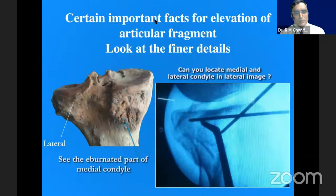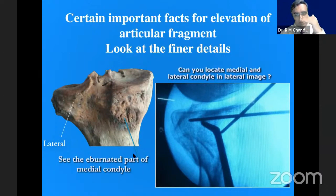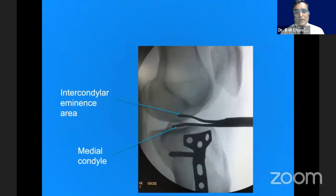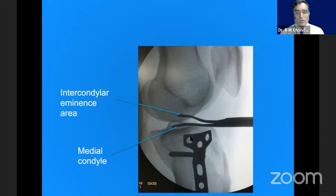This is one picture I like to emphasize quite often. This is the lateral tibial condyle and this is the hibernated part of the medial condyle. How do we see on a lateral SIAM image? We see the lateral condyle and the medial condyle — the medial condyle is more proud. So we can judge which part we are managing. If you put a dura elevator in the intercondylar eminence area and reverse it, it could be on the medial condyle, the concave part.